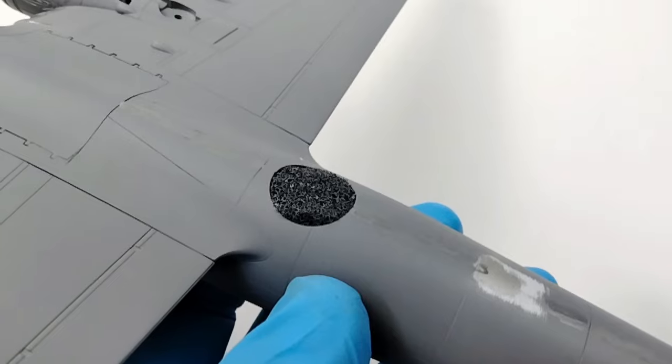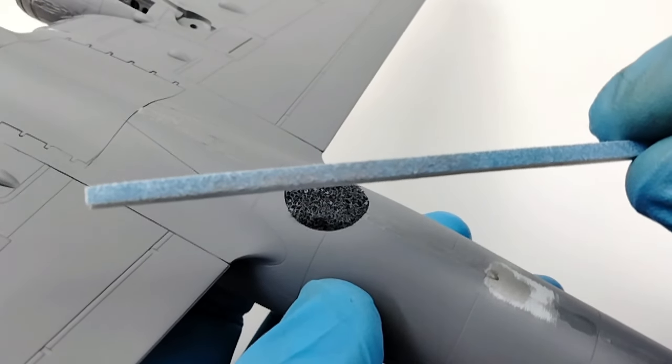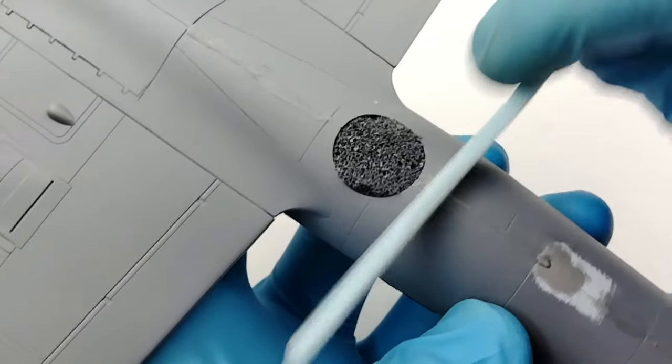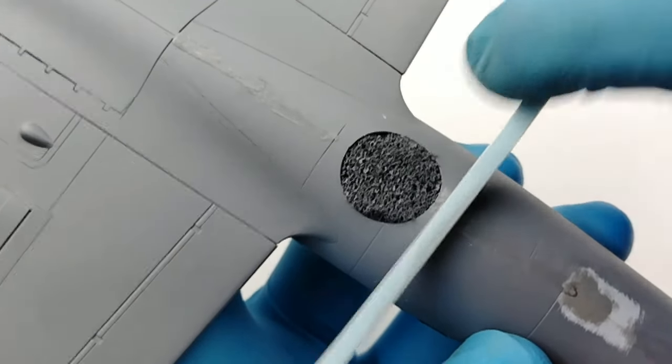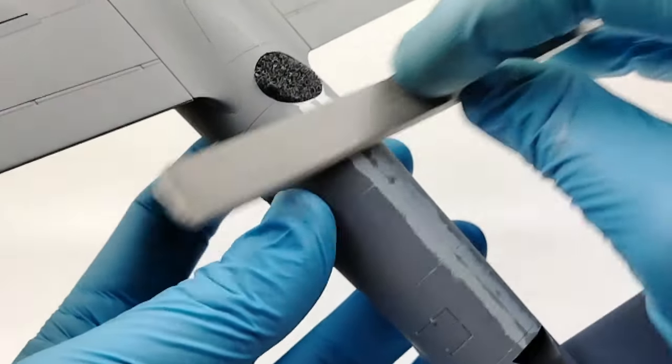Once the glues have been applied and fully cured, I can start sanding them. Typically, I start with a 400 grit sanding stick and work my way through 600, 800, and if I need a higher polish, I'll even go to 1000-2000 polishing sticks.